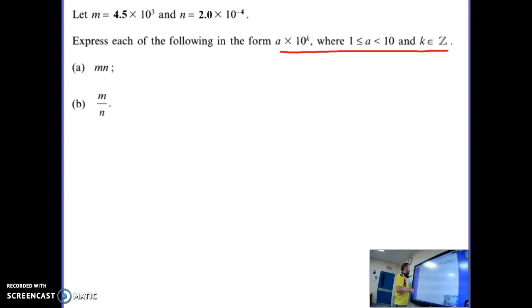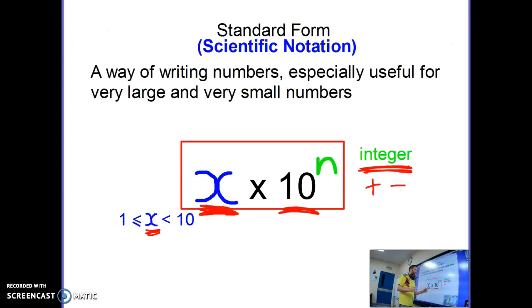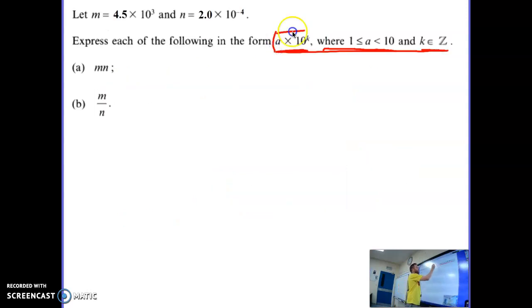The first part says m×n, n multiplied by n. The second part b is m over n, m divided by n. It says express each of the following in the form a times 10 to the power of k, where a is between 1 and 10. If we go back to this x times 10 to the power of n where x is between 1 and 10, that's all this is, it's just different letters in there.